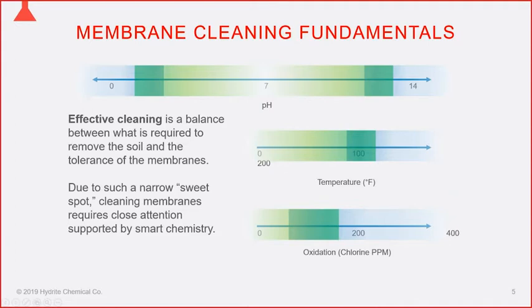Effective membrane CIP requires not only a diligent operator but also a properly calibrated pH meter with fresh buffers, generally on a daily basis, along with a log. Consider how many customers have to clean five or six units at one time while doing numerous other things — it's a constant challenge.